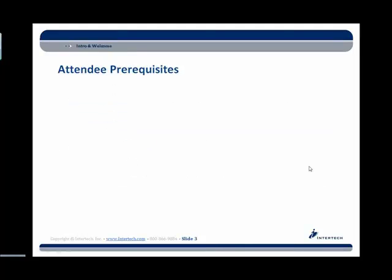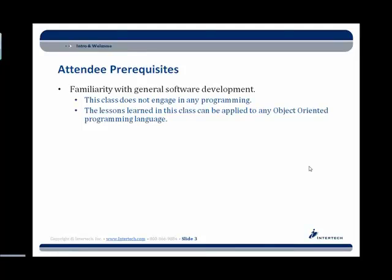As far as attendee prerequisites are concerned, there's not a whole lot that you need for this particular class. Obviously, the more you know about software, the easier this class is going to be. We do expect a little bit of familiarity with general software development, but that does not mean you need to be a programmer yourself. We have a lot of business analysts who don't program that take this class. Everything that you're going to be learning can be applied to any object-oriented programming language — whether you're programming in C#, Java, or Ruby, it doesn't matter.